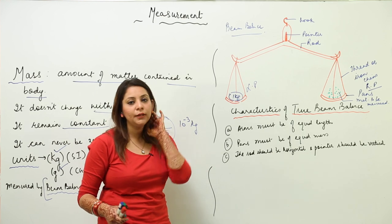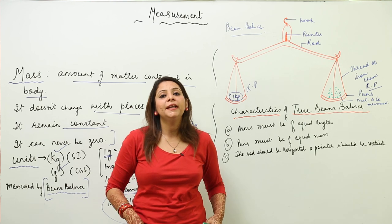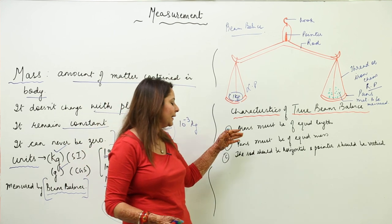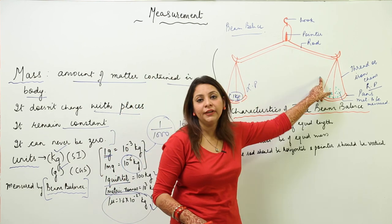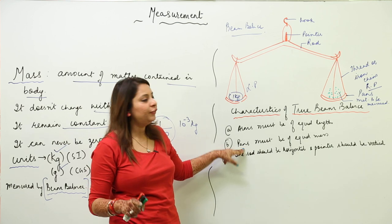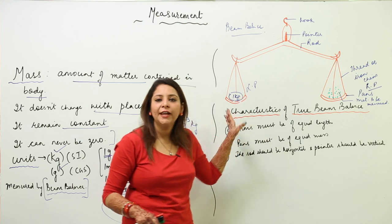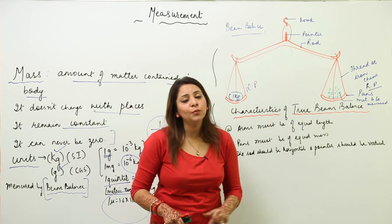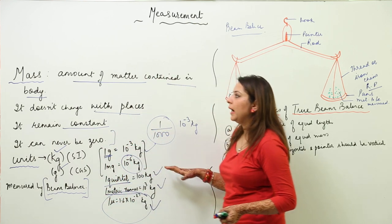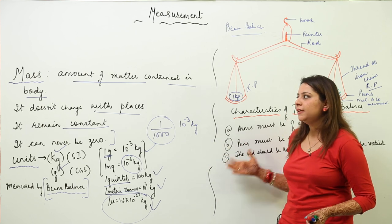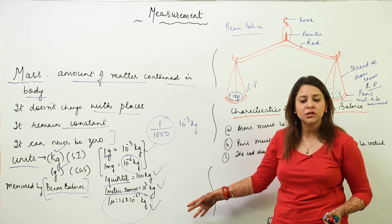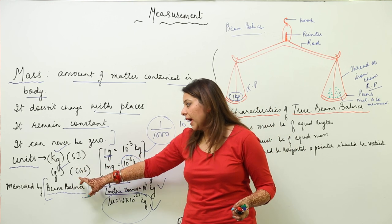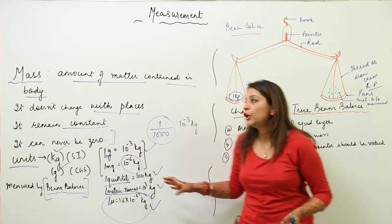For a beam balance to give correct readings, it must have these characteristics: the arms must be of equal length, the pans must be of equal mass, and the rod should be horizontal with the pointer vertical when unloaded. The quantity to measure goes on the right and standard weights on the left. The SI unit of mass is kg and CGS unit is gram — remember these units for solving numericals.